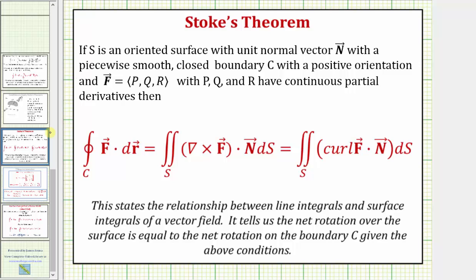Stokes' Theorem states that if s is an oriented surface with unit normal vector n, with a piecewise smooth closed boundary c with a positive orientation, and the vector field f with components p, q, r all have continuous partial derivatives, then the double integral over the surface s of the curl of f dot n differential s is equal to the line integral along the closed curve c of f dot differential r.